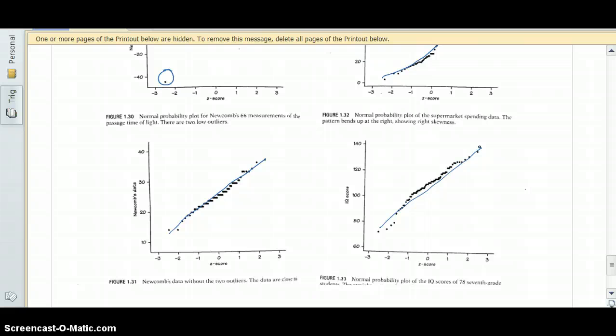So again, the main thing that you guys need to be concerned with when you're looking at a normal probability plot, usually the question we're trying to answer is: is this data approximately normal? And if the normal probability plot shows a straight line, then we would say yes, the data is approximately normal.